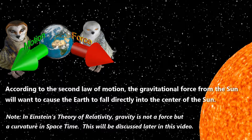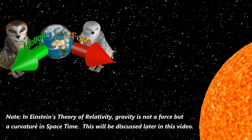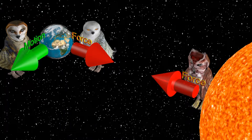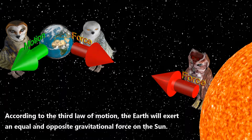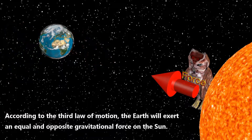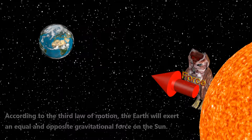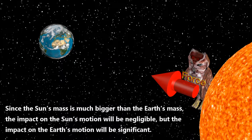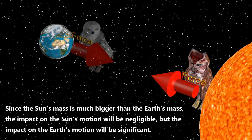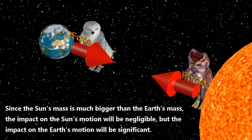In Einstein's theory of relativity, gravity is not a force but a curvature in space-time, which will be discussed later in this video. According to the third law of motion, the Earth will exert an equal and opposite gravitational force on the Sun. Since the Sun's mass is much bigger than the Earth's mass, the impact on the Sun's motion will be negligible, but the impact on the Earth's motion will be significant.